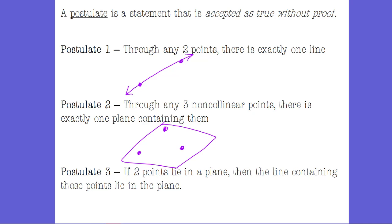Postulate three says if two points lie on a plane, we know from postulate one that there's a line connecting those two points. So if those two points are contained on the plane, the line that contains them is also on the plane.